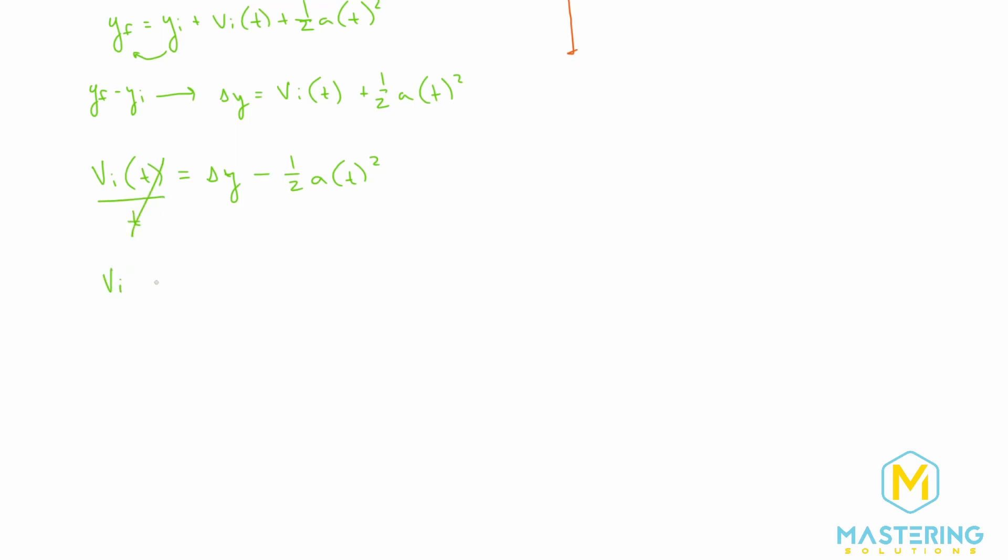Initial velocity is isolated and we have delta Y minus one half times the acceleration times the time squared, all over the time. We have all of these variables, so all we have to do is plug them in and we'll find our answer.